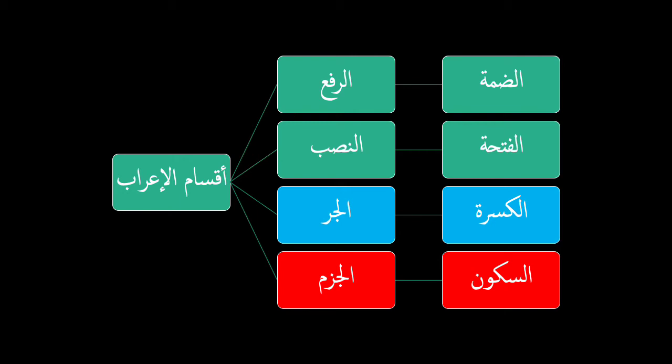But they both — ism and fi'il — can be mansoob and marfoo'. That's in terms of the types of i'raab. Now for each of these types of i'raab there are primary and secondary signs. For example, Zaydun is an ism, it is marfoo', and the sign of rafi' is dhammah — that's the primary sign. Yaqoomu is a fi'il, it's marfoo', and its sign of rafi' is the apparent dhammah — that is the primary sign of rafi'.